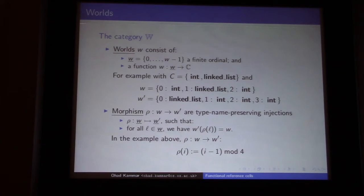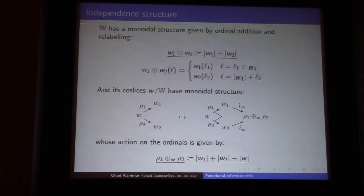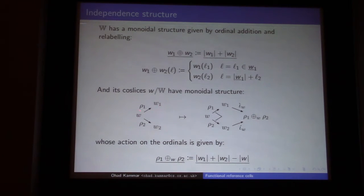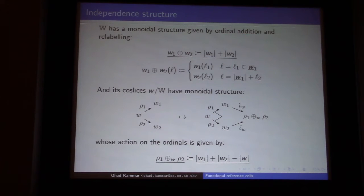This is just standard structure in this kind of semantics. Once you have the category of worlds, there's some structure you need — some kind of separation structure. The basic one is: when you have two worlds, you can put them together separately. More generally, what you really need is this structure on the coslice category. If you have some world and there are two worlds that extend it in different ways, then you can close it back into another extended world — keeping the separate parts separate and the parts that came from W the same. This extended world is everything in W1 and W2, but you only count the stuff in W once.